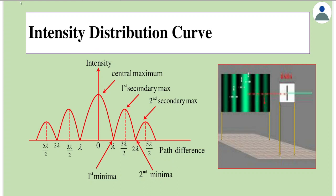Let's redraw this graph separately. The graph is called the intensity distribution curve. On the x-axis we have taken path difference, and on the y-axis we take intensity. Let's recall what the formula for light and dark bands was.